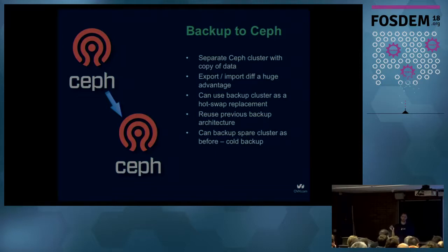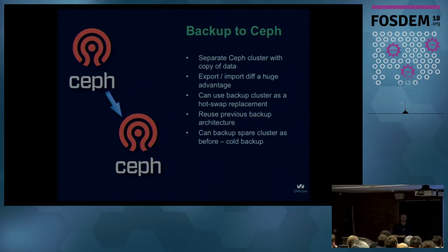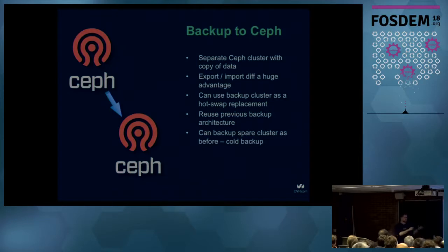We noticed a nice Ceph feature: 'rbd export-diff' and 'rbd import-diff' — you can export only the changes from a given snapshot in time. We thought there must be performance benefits there. Also, a crucial property: if our original cluster dies, we just take the spare backup cluster, plug it into OpenStack, and start firing VMs back — very quick recovery without copying data back anywhere.